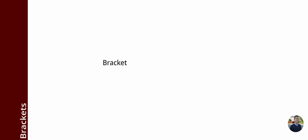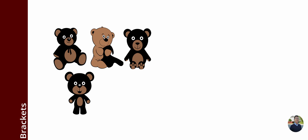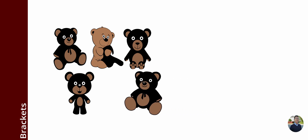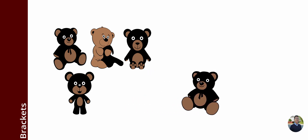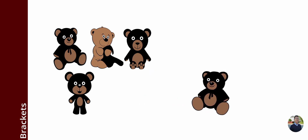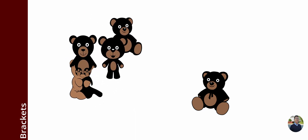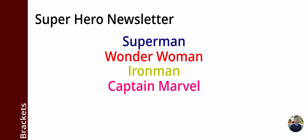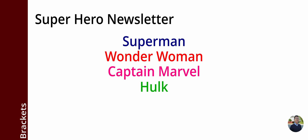Brackets are used to make lists. A list is like a collection of things that you can change and add to. Imagine you have a list of your favorite toys — you can look at the toys, play with them, add new toys, or take away toys from the list. For example, a program might use a list to store names of people who have signed up for the newsletter, adding or removing names as needed.